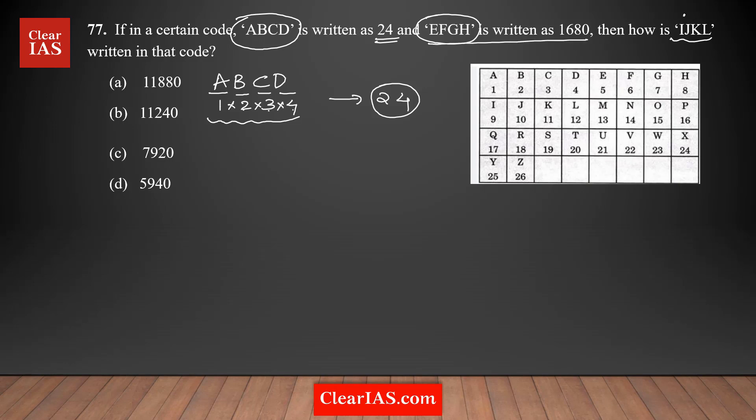Let's try the next one, EFGH. The positions are E is 5, F is 6, G is 7, and H is 8. You need to multiply all of them. 5 times 6 is 30 times 7 times 8 is 56, so 56 times 30 is 1680. This is correct, so we've identified the logic.